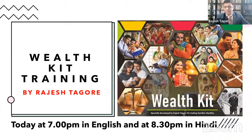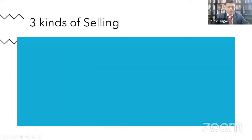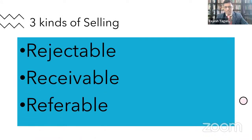Today we are going to have 7 p.m. in English and 8:30 in Hindi, the Wealth Kit training. I will quickly get into the subject we covered yesterday. We covered three kinds of selling: rejectable selling, receivable selling, and referable selling.